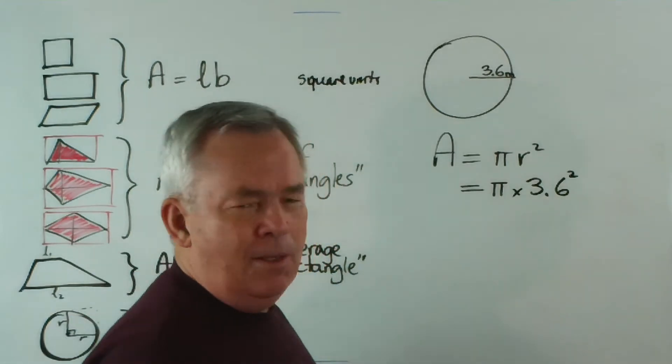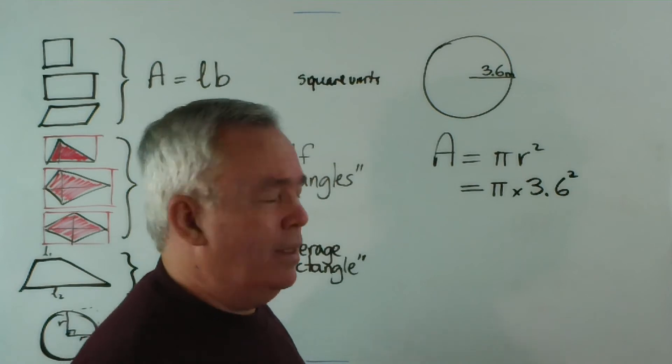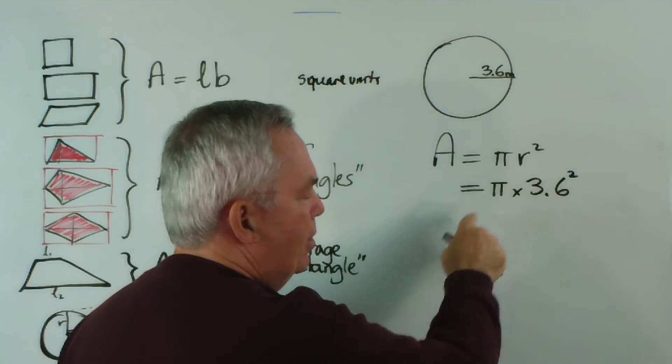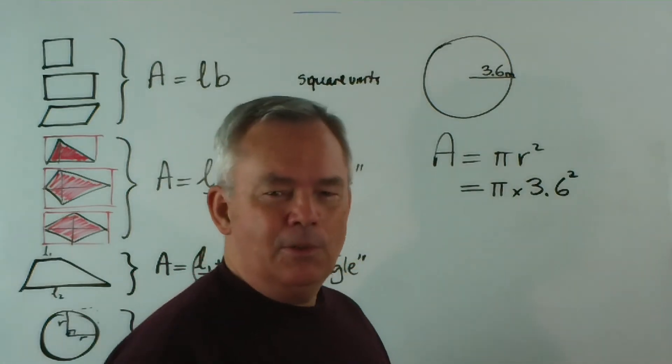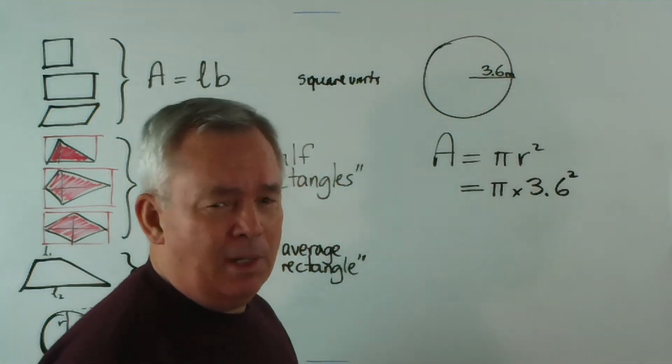By the way, in writing pi, if you get a Greek book or a Greek newspaper or visit Greece, you'll find that pi is generally written with two straight lines and a straight line across. There's no need to make it fancy with little curls and twists and things. You can if you wish, but that's the basic way of writing pi, very simple.